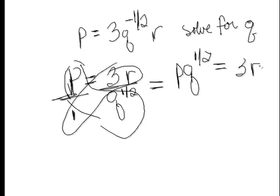So now I have Q in a position where I can finally get it by itself. The next step is to finally get Q to the one-half by itself. To do that, I need to get rid of the P. And to get rid of the P, I'm going to divide both sides by P. So now I have Q to the half equal to 3R over P.